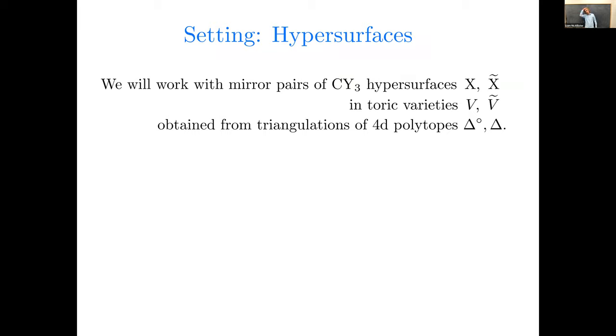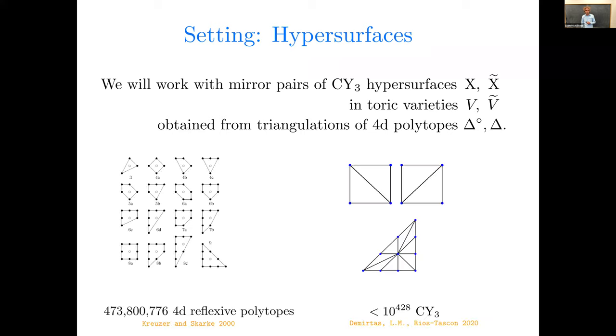So faced with that, what can we do? So we're going to try and do this in the setting of Calabi-Yau hypersurfaces. So we'll work with mirror pairs of hypersurfaces, X and X-tilde, in some toric varieties V and V-tilde that we obtain from triangulations of four-dimensional polytopes, delta-circ, delta, respectively. And as you likely know, Kreuzer and Skarke have classified all the four-dimensional reflexive polytopes. There are 473,800,776 of them. When we're going to need to study triangulations of those things, we proved recently that there are at most 10 to the 428 distinct Calabi-Yau three-folds resulting from triangulations of the Kreuzer-Skarke polytopes. So we want to explore somewhere in this realm. That's a big realm, which is nice.